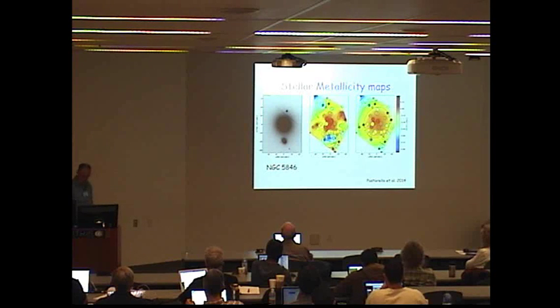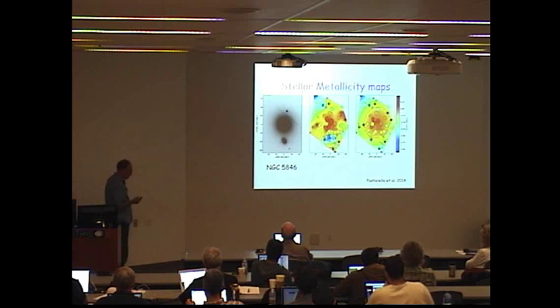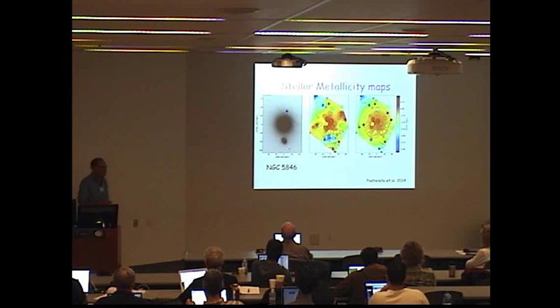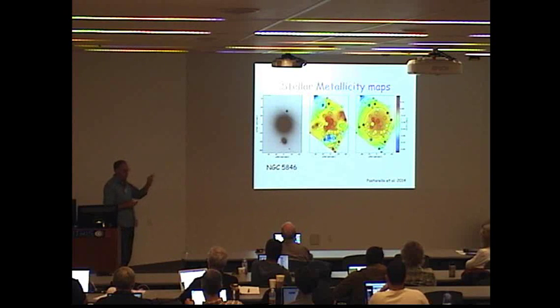I'm not going to say too much about the metallicity maps that we derived, but here's just a quick example. Here's just an image of NGC 5846, you see the galaxy itself and a little small galaxy down here. Here's our metallicity map, all these little circles represent our discrete data points.